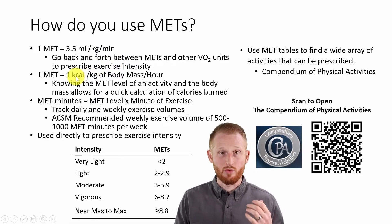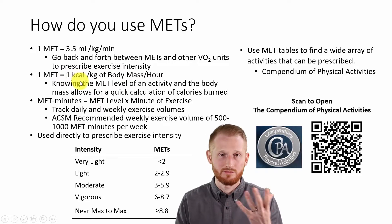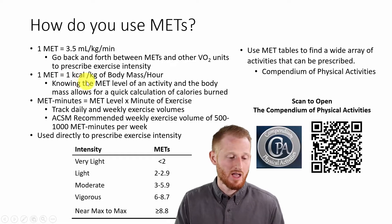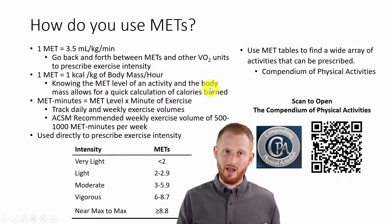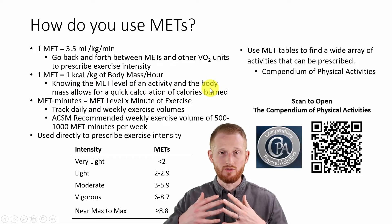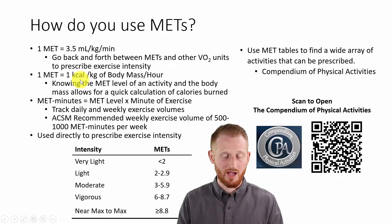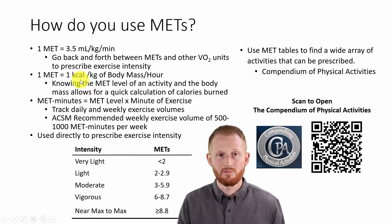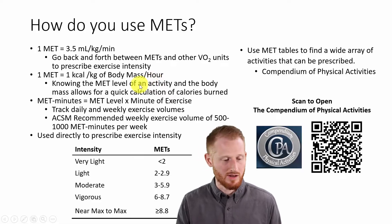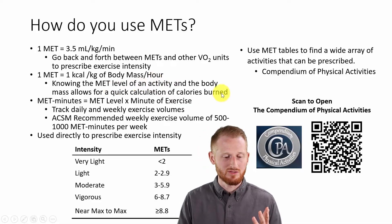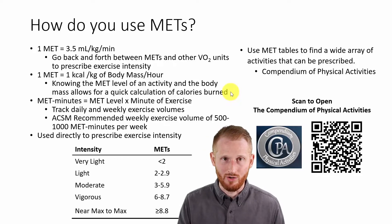Another working definition of a MET is that one MET equals one kilocalorie — or calorie, if you're in the United States — per kilogram of body mass per hour of that activity. So if you do something that is five METs, that means you're going to be burning five kilocalories of energy per kilogram of body mass per hour of that activity. Knowing this allows you to do some quick calculations to figure out how many calories are burned during an activity.